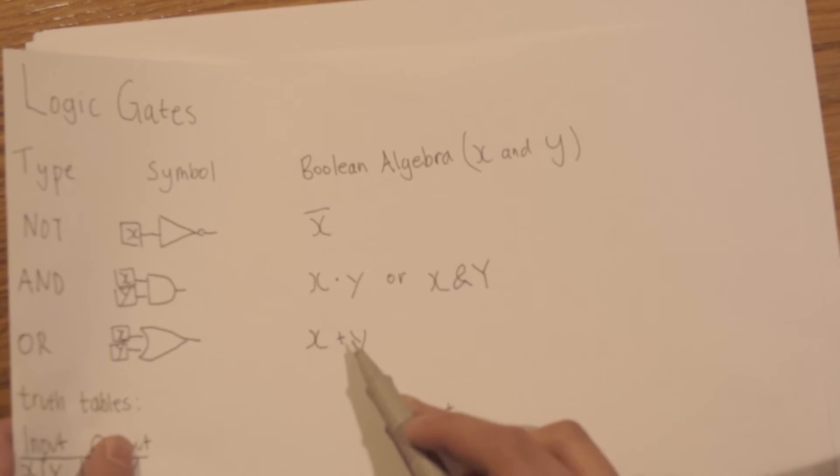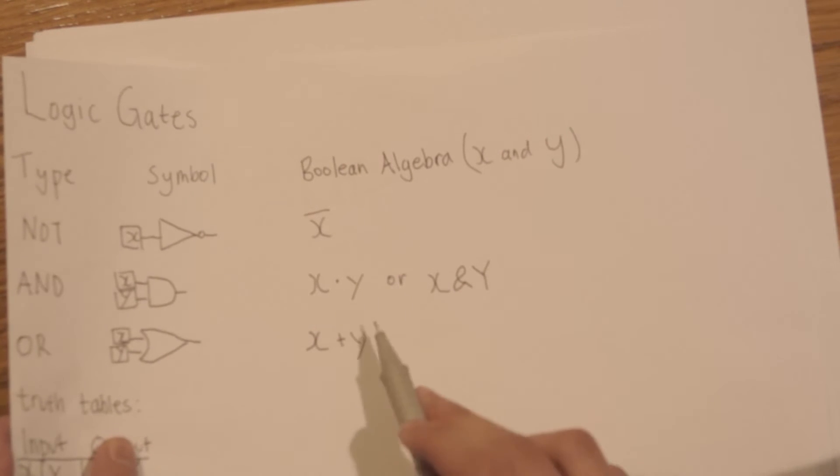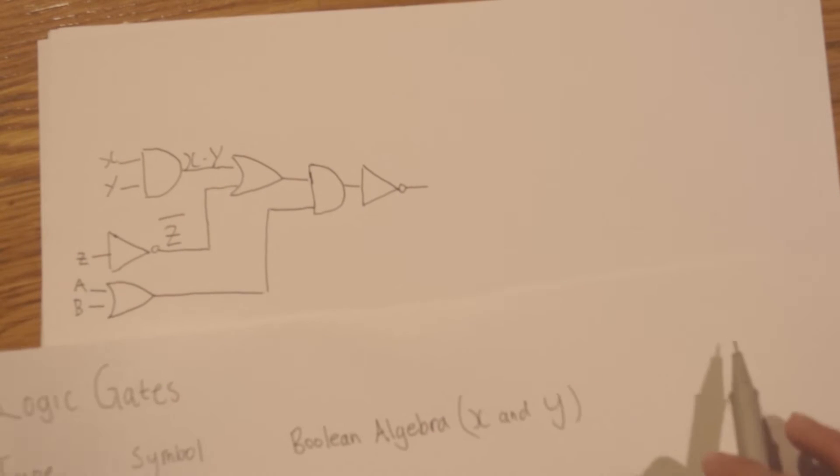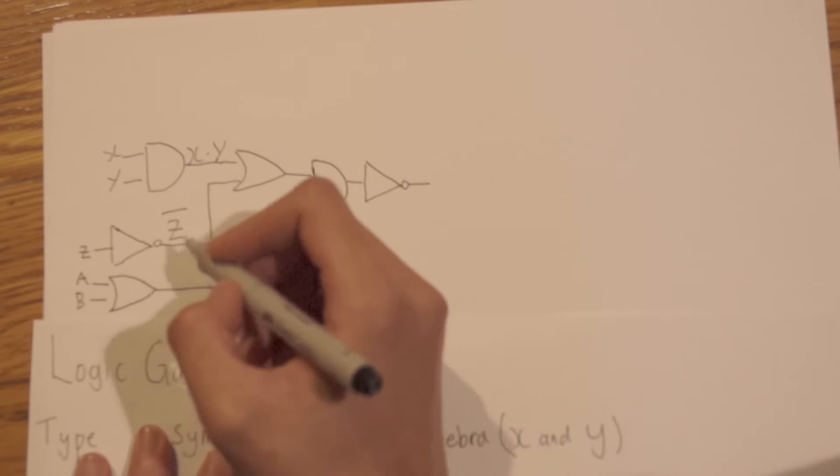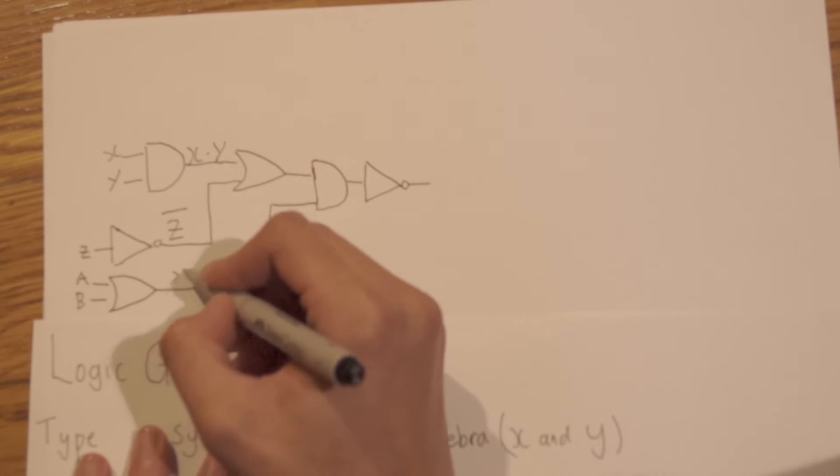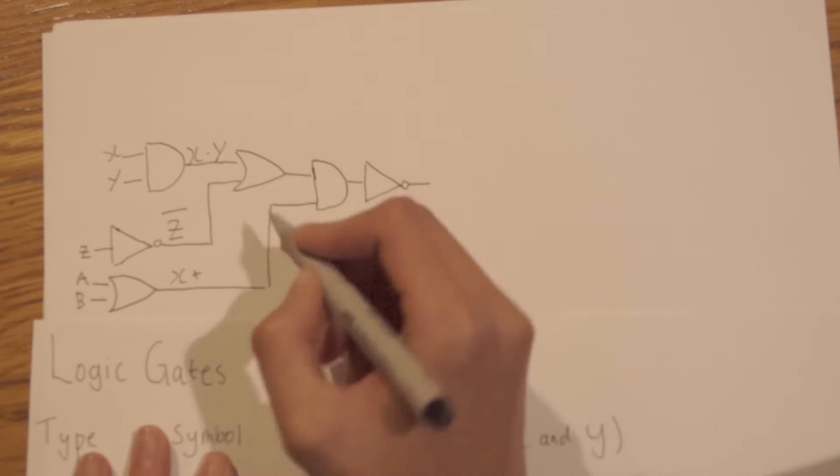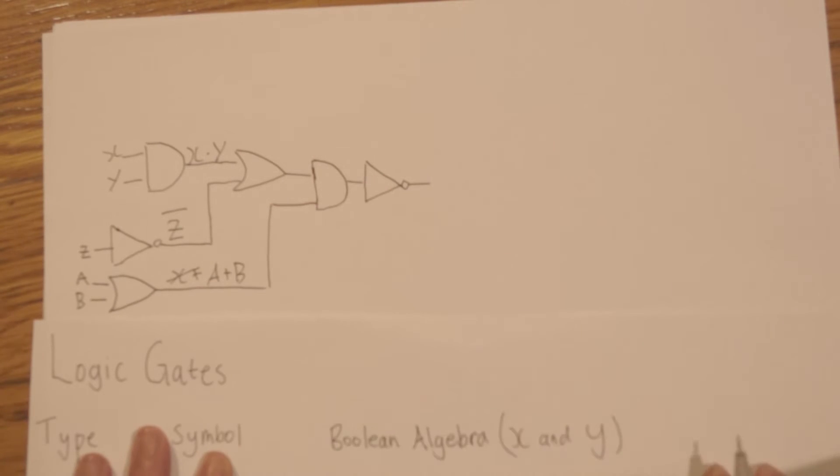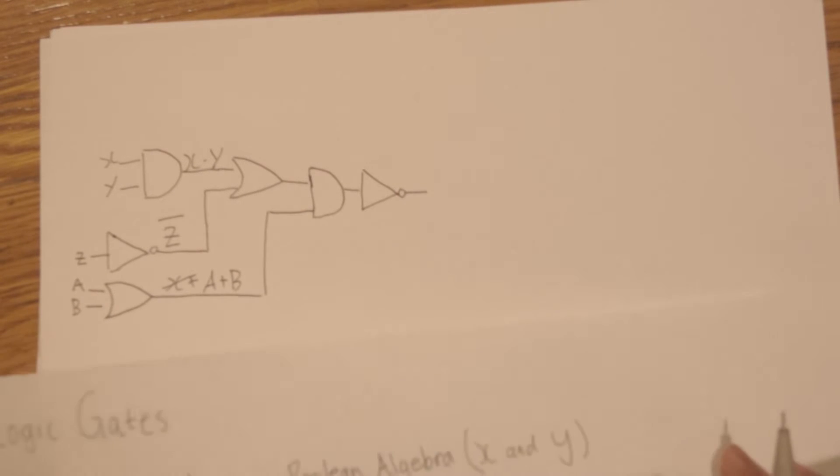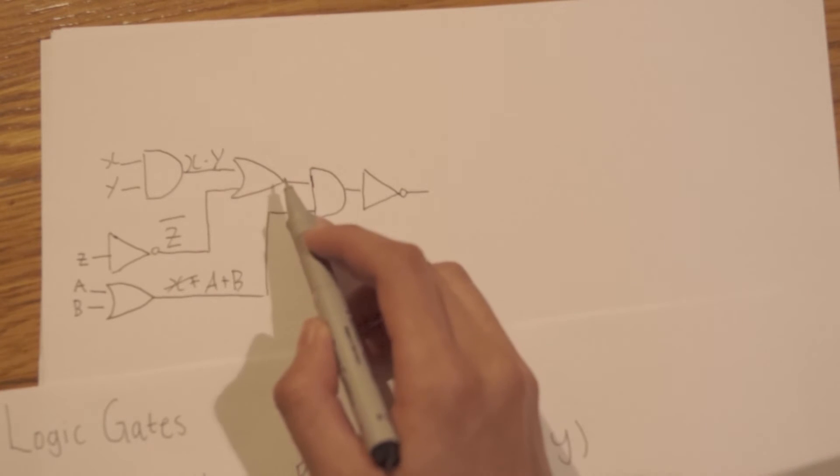Now here we have an OR gate. Remember the OR gate is x plus y. It's not actually x plus y, it just means it's x or y. Now let's do x plus y here. No actually, in our case it's a plus b. So it's a plus b.